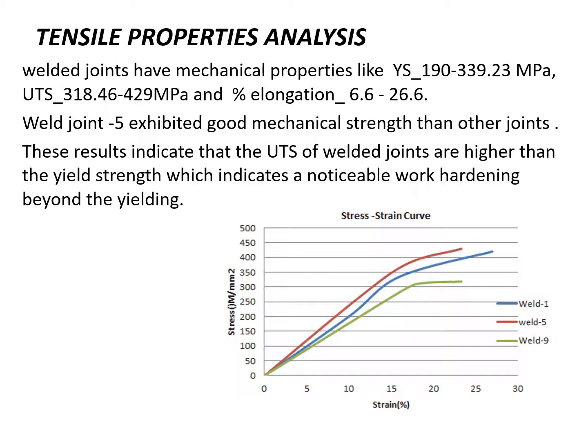In tensile properties, the joints have good mechanical properties which range in yielding from 190 to 339 MPa, ultimate tensile strength of 318 to 429 MPa, and percentage elongation of 6.6 to 26%. Weld joint sample 5 exhibited good mechanical properties as compared to the other joints. The figure represents the stress-strain curve for various weld samples. The UTS of the joints is higher than the yield strength, indicating noticeable work hardening beyond the yielding process.